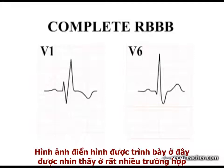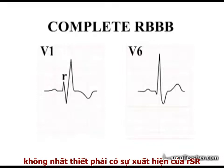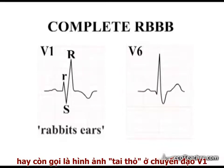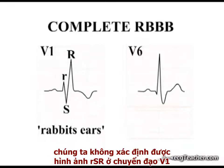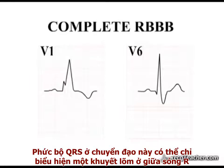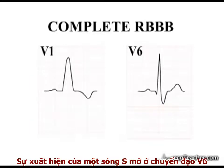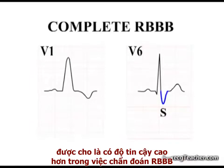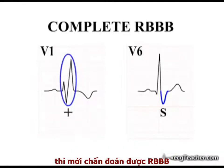The classic pattern is seen in many cases. However, it is important not to become over-reliant on the presence of the RSR pattern, or so-called rabbit's ears appearance in V1, to make the diagnosis. In many cases of right bundle branch block, the RSR pattern in V1 is not identifiable, with the QRS complex in this lead either demonstrating a small notch between the two R waves or indeed having the appearance of one large R wave. The presence of a slurred S wave in lead V6 is said to be more reliable in the diagnosis of right bundle branch block. Also, the QRS complex in lead V1 must be overall positive to make this diagnosis.